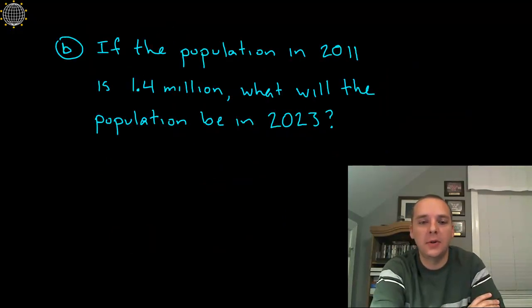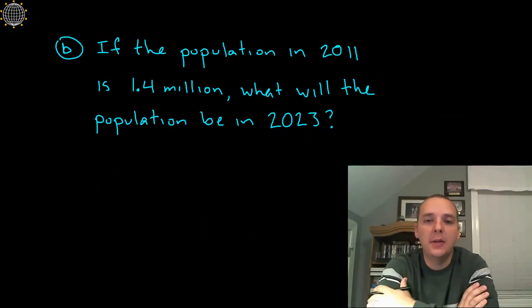Alright, step two, often these questions will have multiple part problems. It says if the population in a particular year, namely 2011, was 1.4 million people in a certain city, then they ask us to predict what the population will be in 2023.